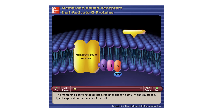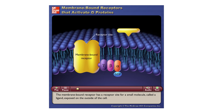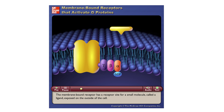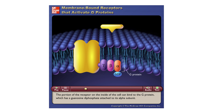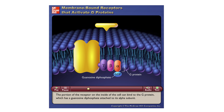The membrane-bound receptor has a receptor site for a small molecule called a ligand exposed on the outside of the cell. The portion of the receptor on the inside of the cell can bind to the G protein, which has a guanosine diphosphate attached to its alpha subunit.